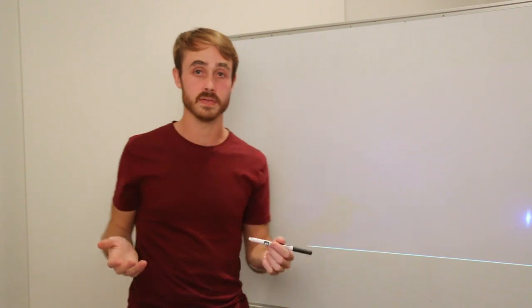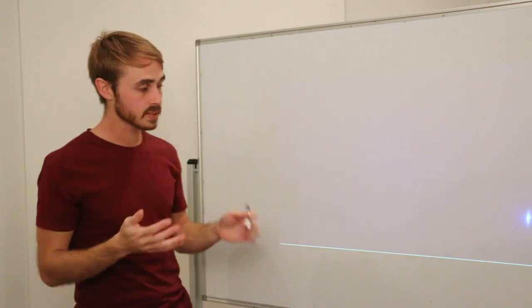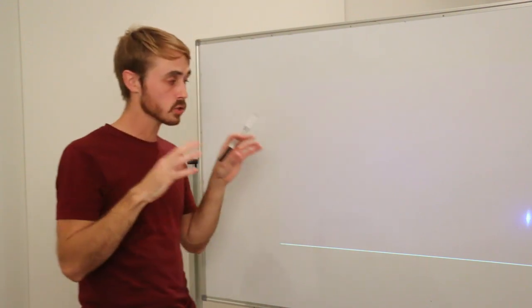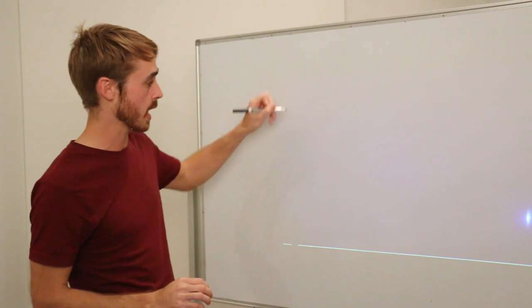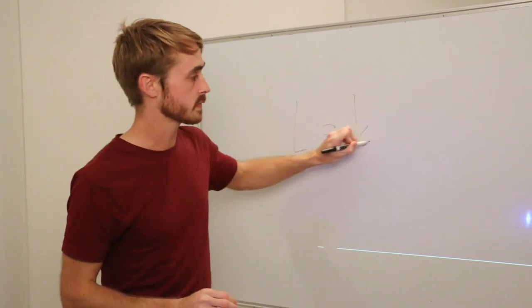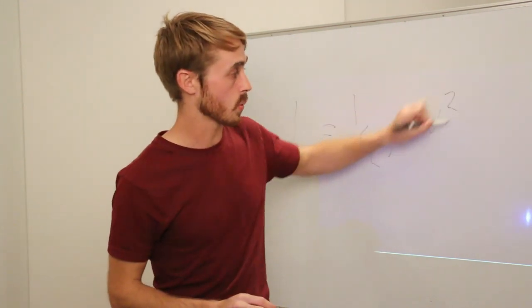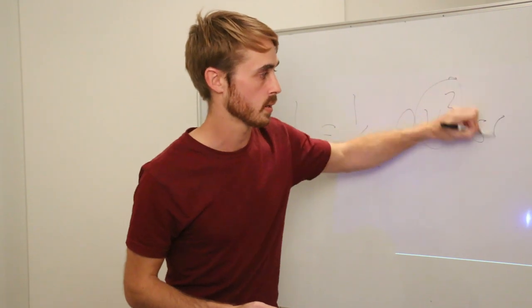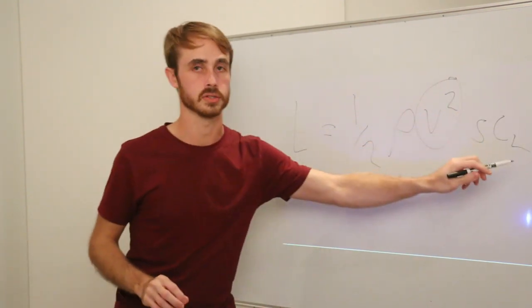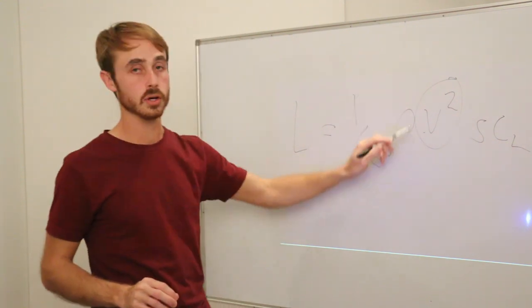The other benefit of active aerodynamics is that you can lower your downforce whenever you need it. And this is handy because as the speed increases, the downforce increases at a rapid rate. The formula for lift is lift equals a half rho, density of the air, V squared, so velocity squared, S area, CL, the coefficient of lift.